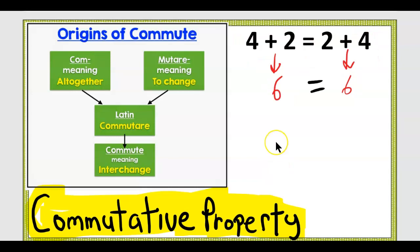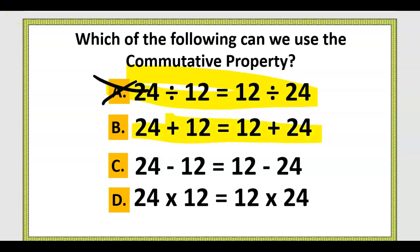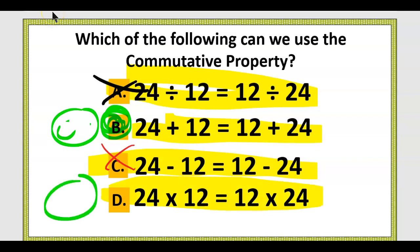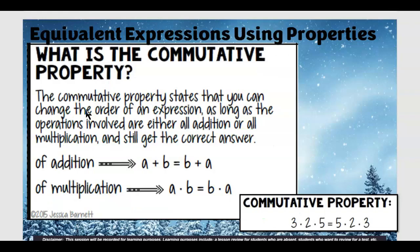There are really three big properties total. Quick check: which of the following can we use the commutative property? Pause the video if you want to. If you said A, you're wrong. If you said B, you're partly right because there's more than one answer. If you said C, you're wrong. If you said D, by process of elimination, you're right. Commutative property can be used for addition and multiplication.